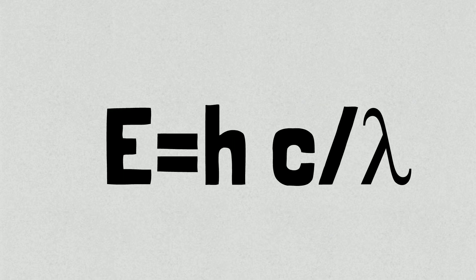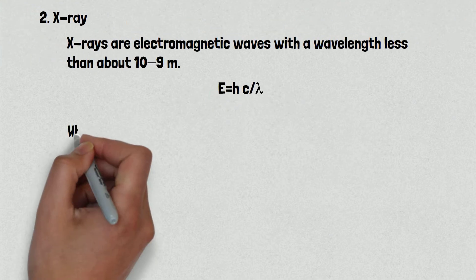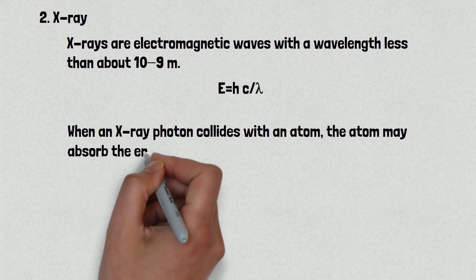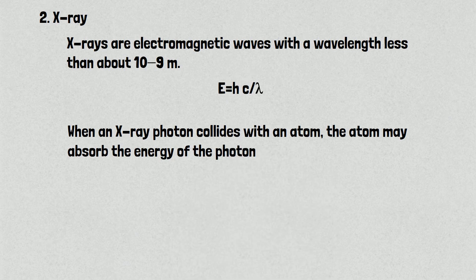E is energy, h is Planck's constant, c is the speed of light, and lambda is the wavelength. When an x-ray photon collides with an atom, the atom may absorb the energy of the photon and boost an electron to a higher orbital level, or if the photon is extremely energetic, it may knock an electron from the atom altogether, causing the atom to ionize.